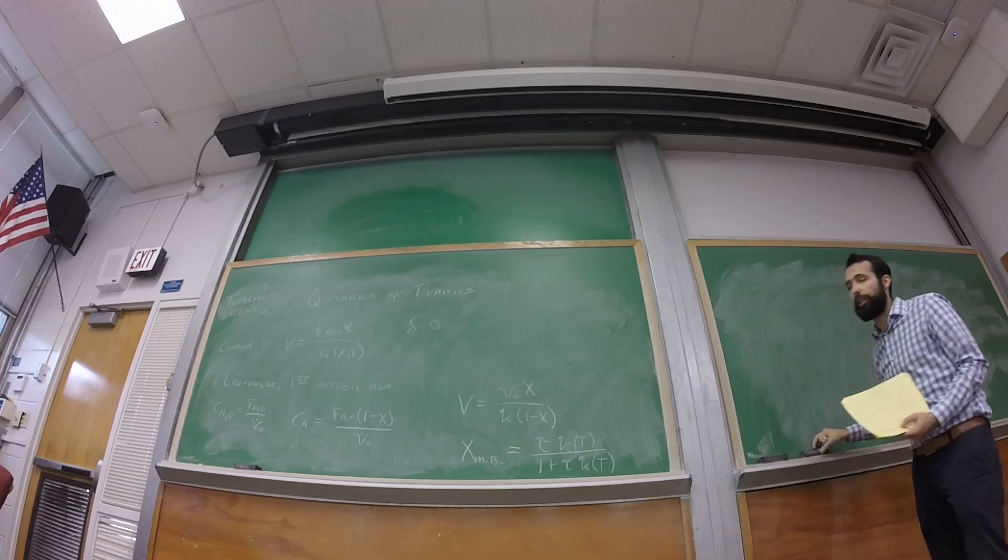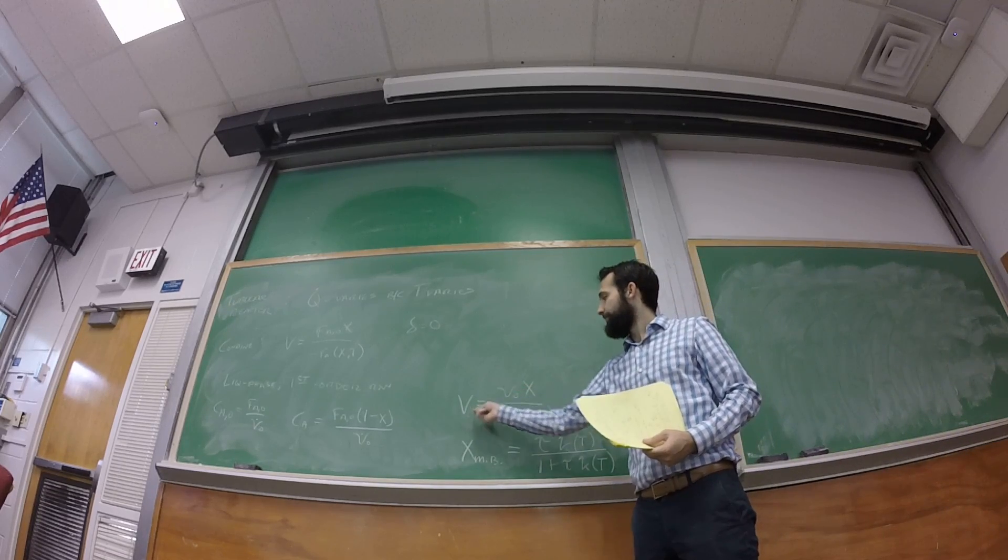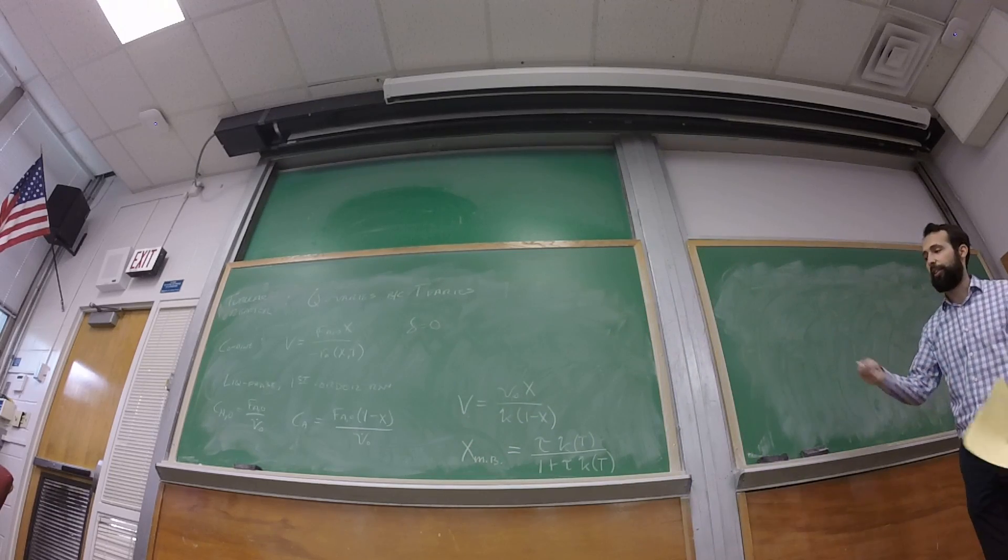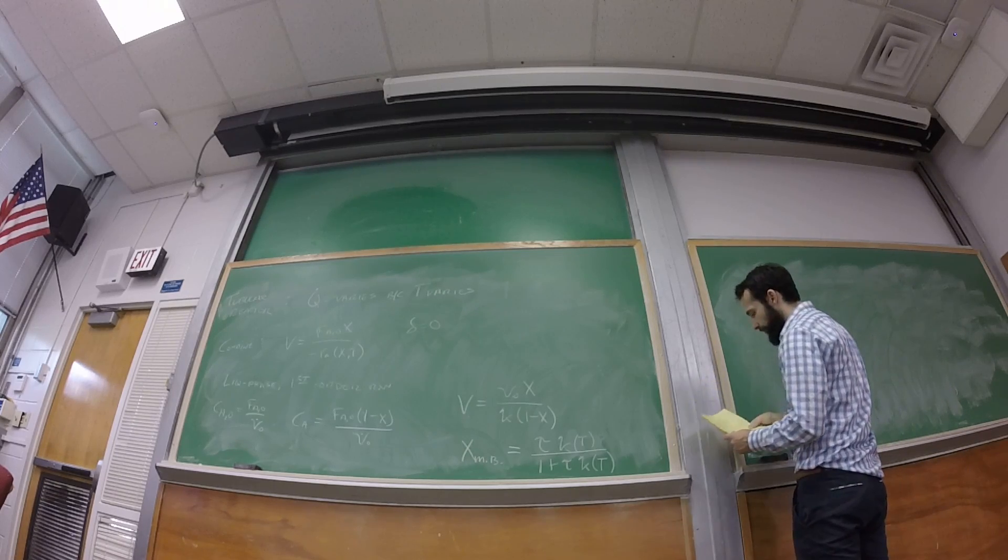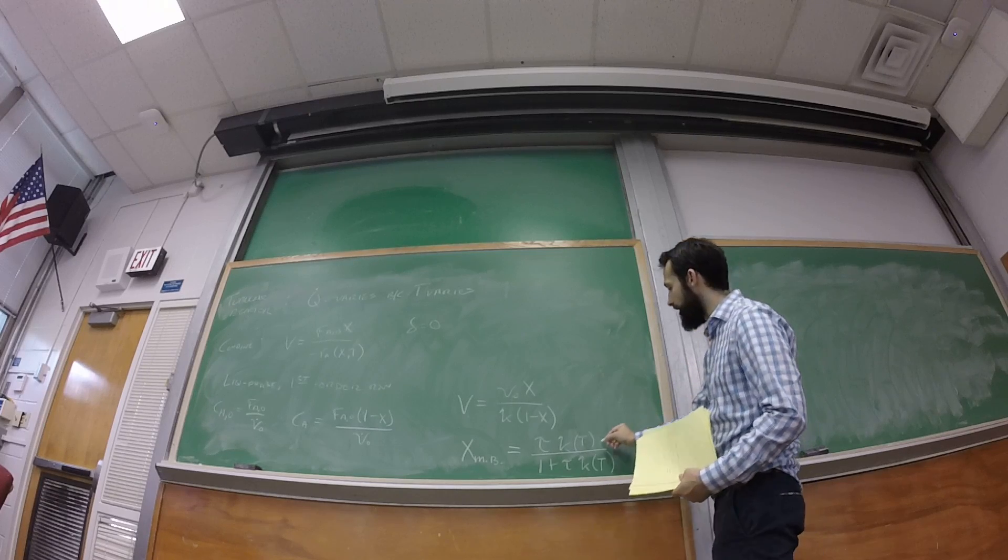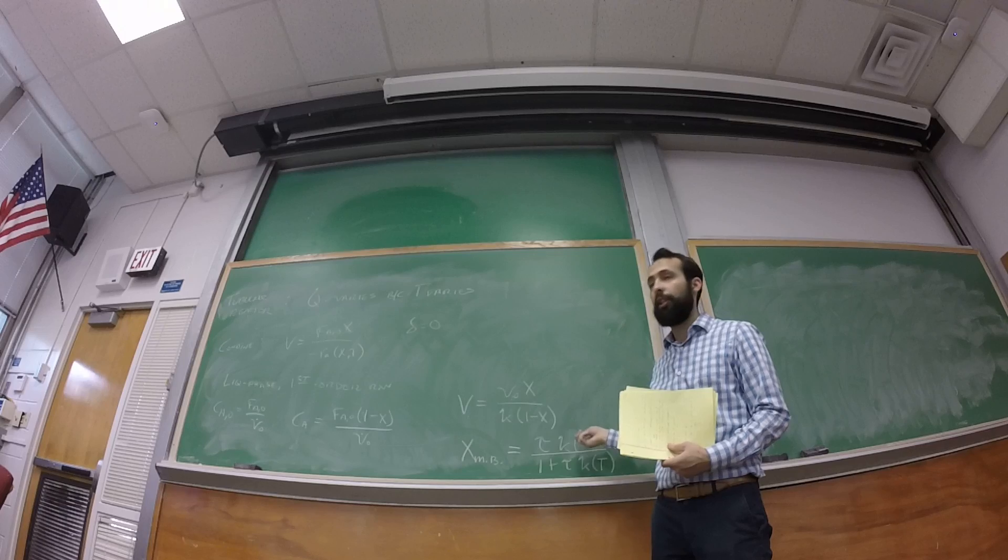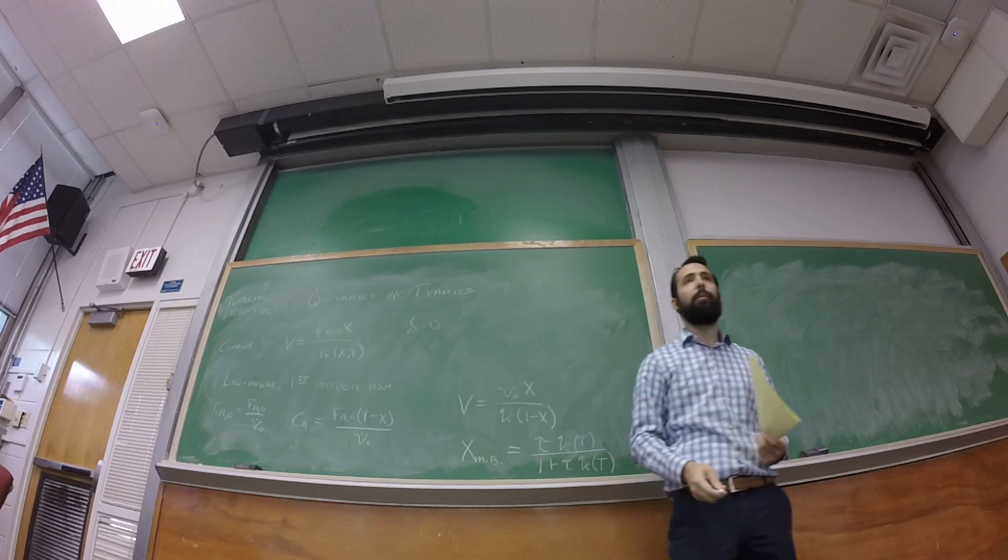I have volume and I have volumetric flow rate. Divide, I get the residence time. So I have one equation done that relates conversion to temperature based on things we know, tau. And we get that from the material balance. Now we're going to do it again.